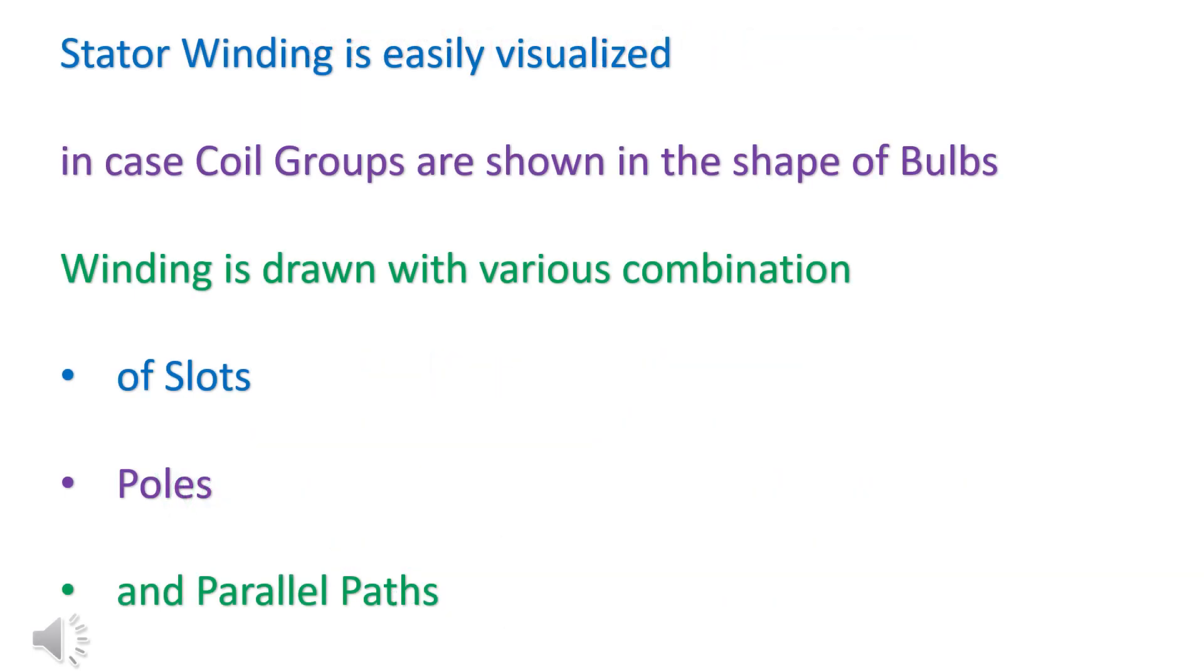Stator winding is easily visualized in case coil groups are shown in the shape of bulbs. Winding is done with various combinations of slots, poles, and parallel paths.